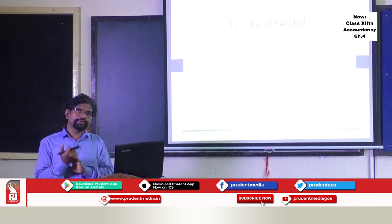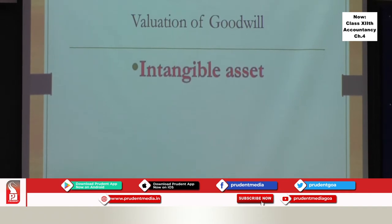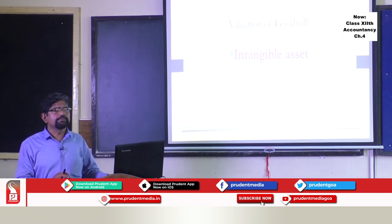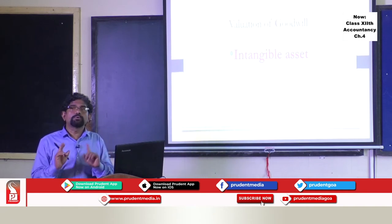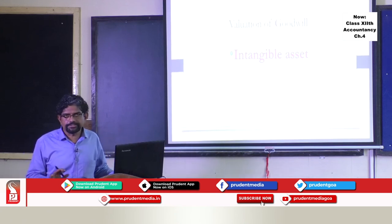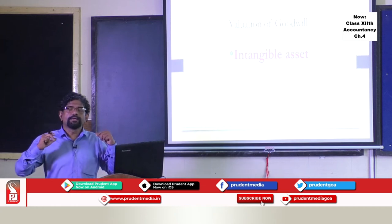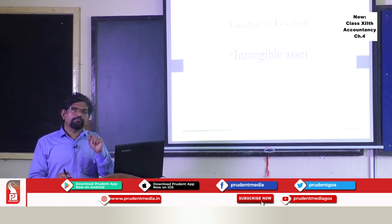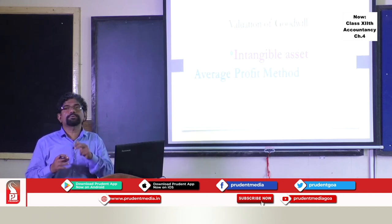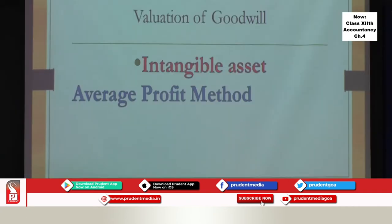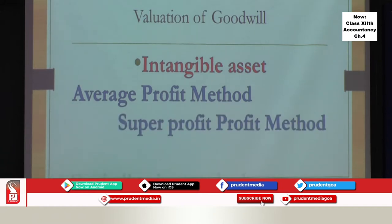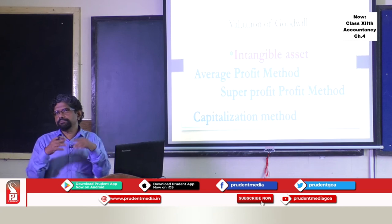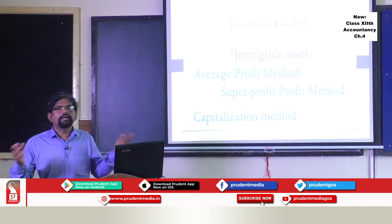Goodwill is an intangible asset. It is not like furniture, machinery, or land and building, which are tangible assets and very easy to value. Goodwill is intangible — no one can see it, only we can experience it through the super profit earning ability of a business. So goodwill valuation becomes estimation. We are going to estimate goodwill using certain methods like average profit method, super profit method, and capitalization method. We will apply these methods and value goodwill — these are estimates, not actual valuations like a tangible asset.